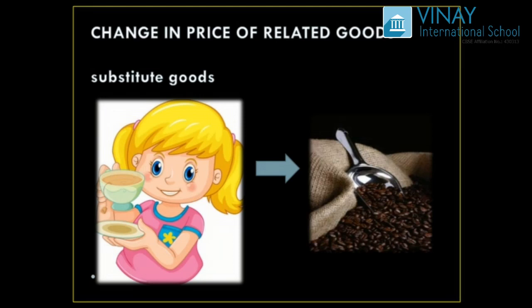This is the concept of substitute goods — goods that can be used in place of each other. Real-life examples include tea or coffee, and Coke and Pepsi. When the price of one goes up, the demand for its substitute increases.